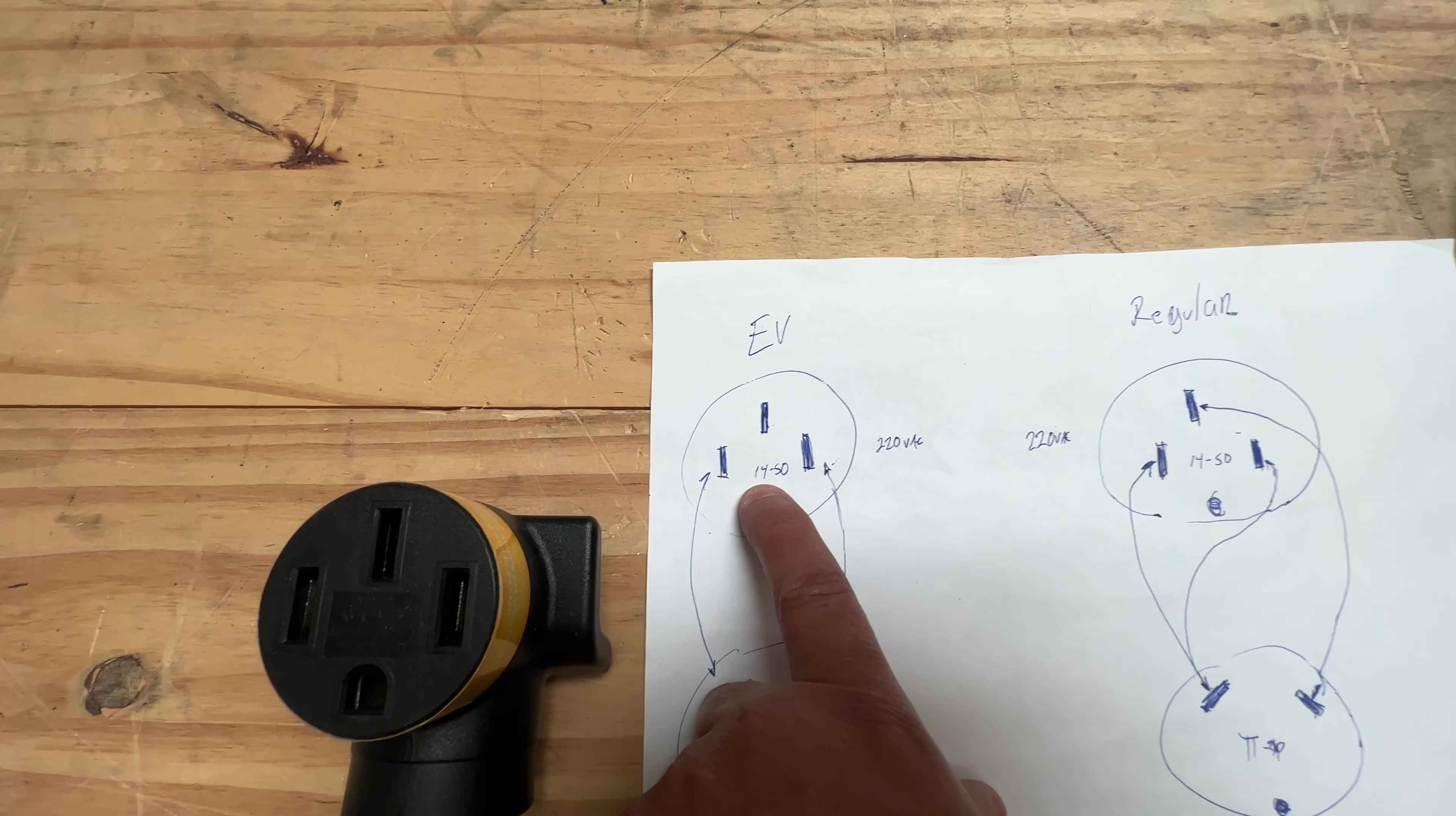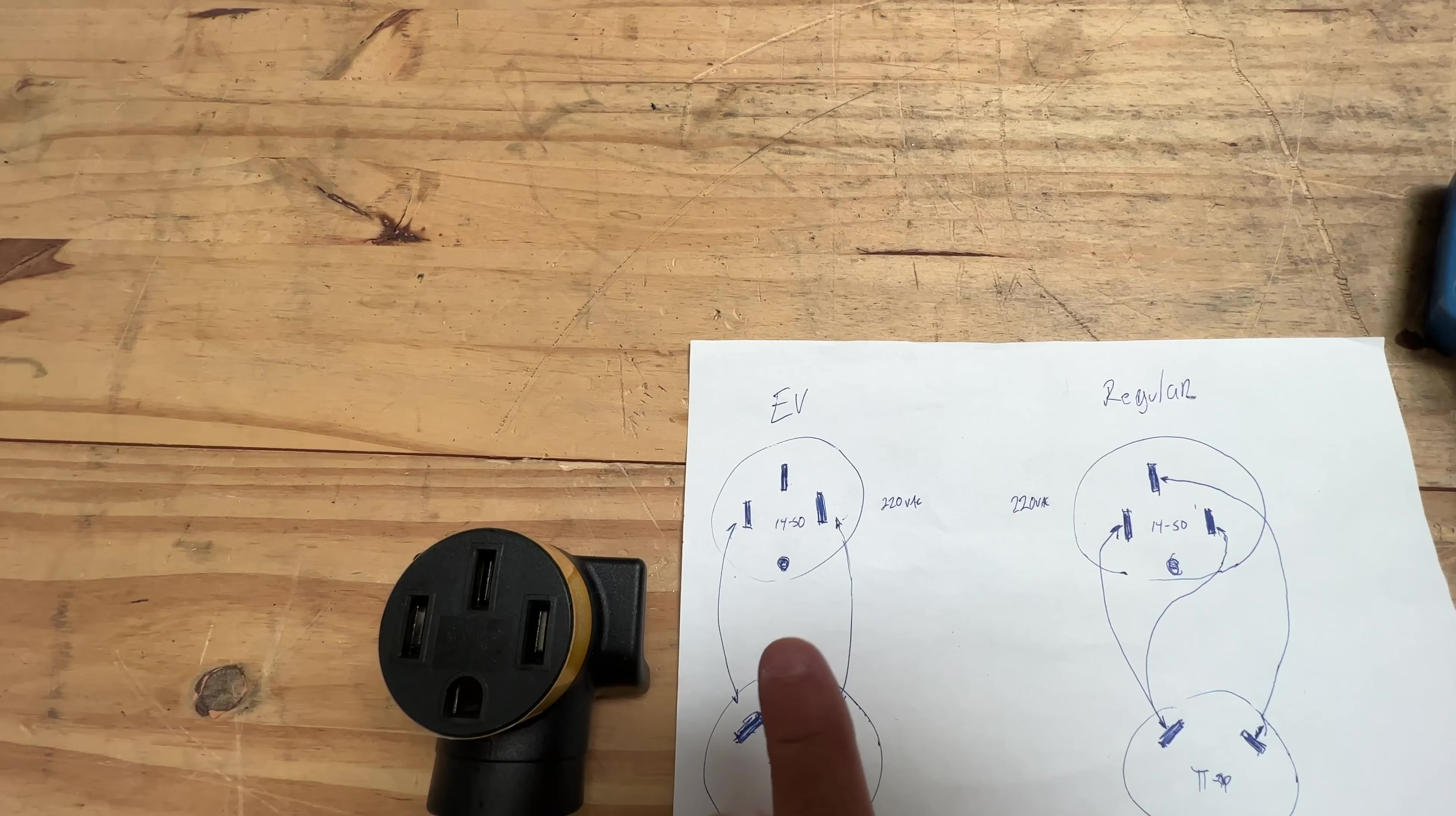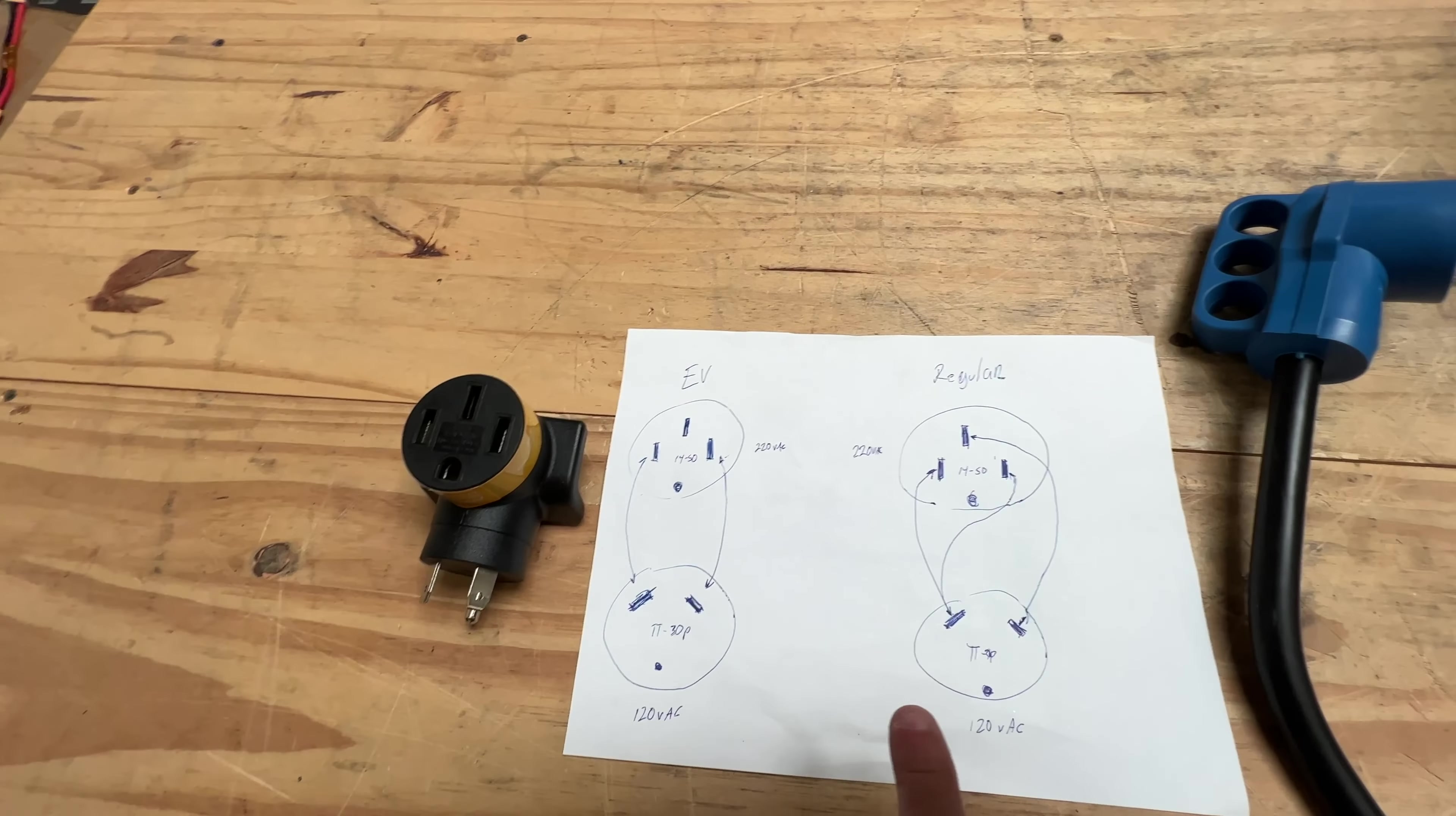This plug is one of the few plugs that has all the pins. You have the ground, then you have the neutral, and then you have the two hots. When you connect this, you can get both voltages—half voltage or full phase voltage.